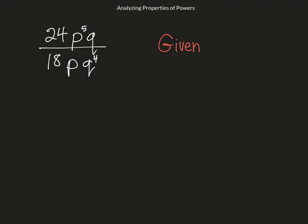Now the first thing I want to do is break it up into 24 over 18, times p to the fifth over p - I'm going to go ahead and write that as the first power - times q, again to the first power, over q to the fourth.